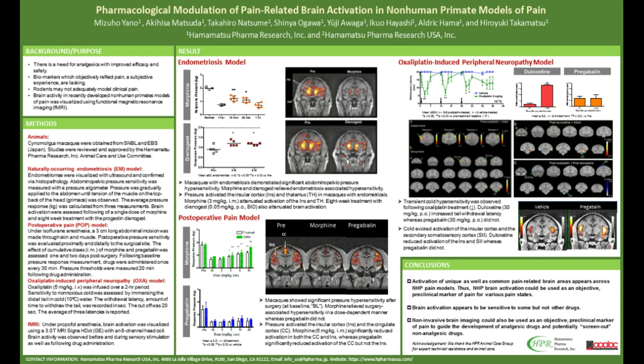In this model, we see brain activation in the insular cortex and also the cingulate cortex. This activation was reduced with morphine, but with pregabalin, the brain activation in the insular cortex was not reduced, which means that the insular cortex is more related to pain-associated pain perception.